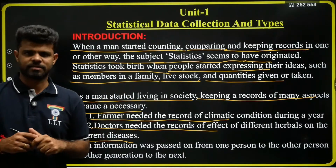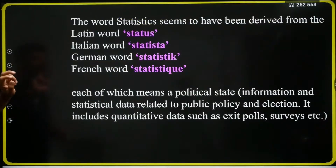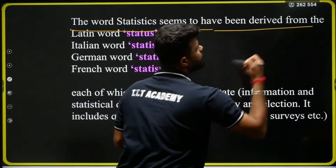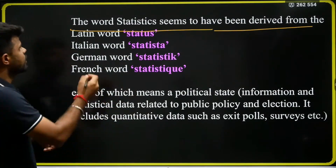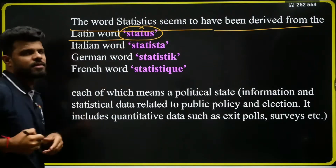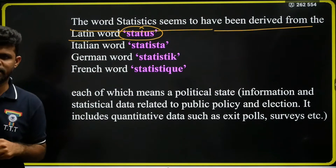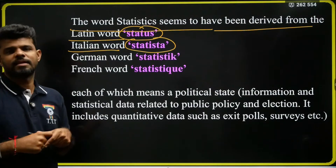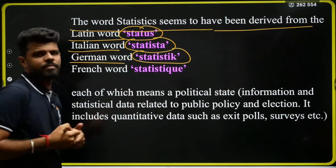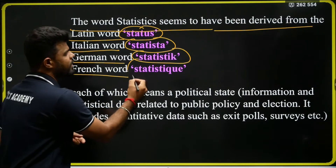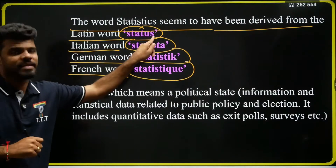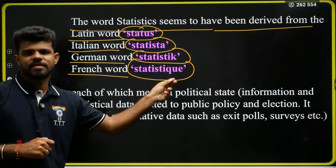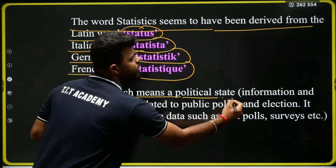The word 'statistics' seems to have been derived from Latin. In Latin, statistics is called 'status'. In Italian, it is called 'statista'. In German, it is called 'statistic'. In French, it is also called 'statistique'. All of these words carry the meaning of 'political state'.